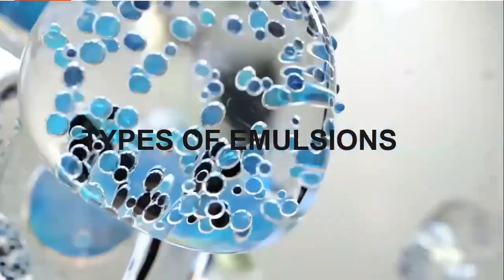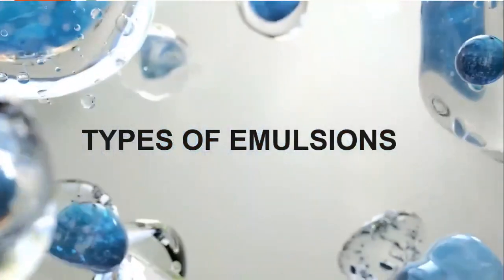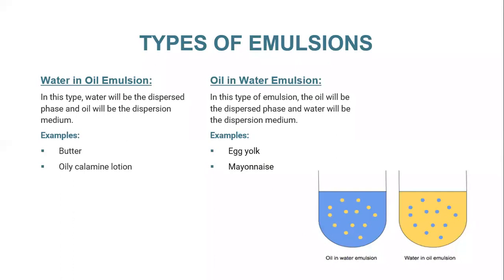I'm going to discuss the types of emulsions. The two major types of emulsions include water-in-oil emulsions and oil-in-water emulsions.